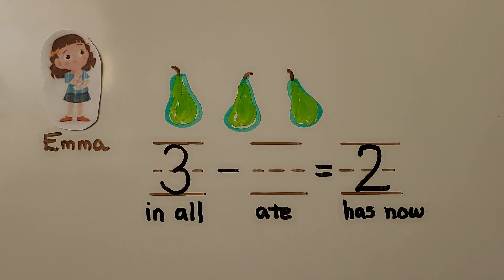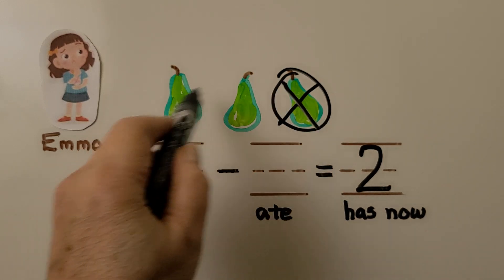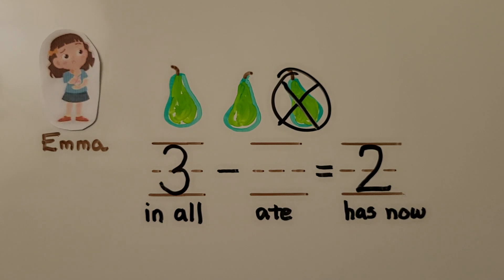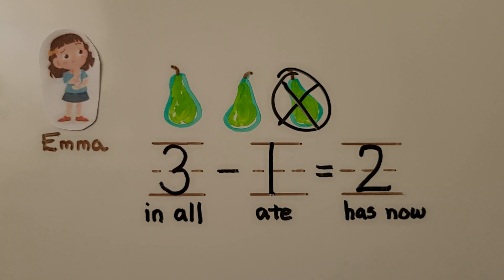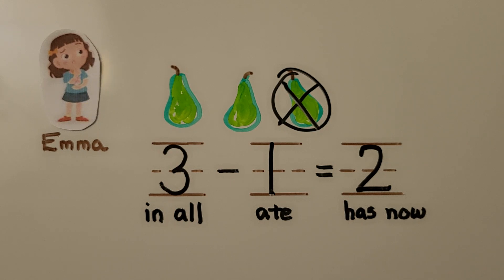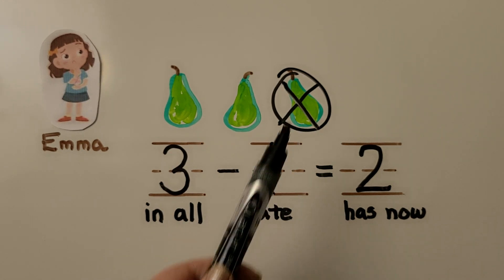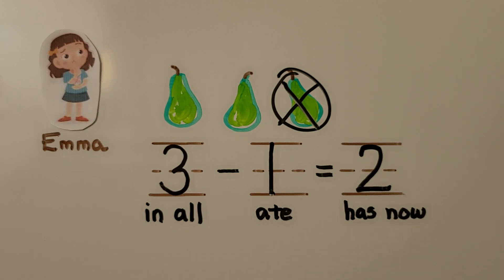We can circle and cross out all the pears except the two she has now. We cross off and circle this one — here are the two she has now. We count and write how many we crossed out: one. The missing number was how many we crossed out. Three in the set minus one that she ate is equal to two she has now. Three minus one is equal to two.